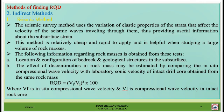The following information about rock masses is obtained from seismic tests: (a) the location and configuration of bedrock and geological structures in the subsurface; (b) the effect of discontinuities in the rock mass, estimated by comparing the in-situ compressional wave velocity with the laboratory sonic velocity of intact drill core from the same rock mass. The equation is: RQD equals (Vf divided by Vl) squared, multiplied by 100 — where Vf is the in-situ compressional wave velocity and Vl is the compressional wave velocity in intact rock core.